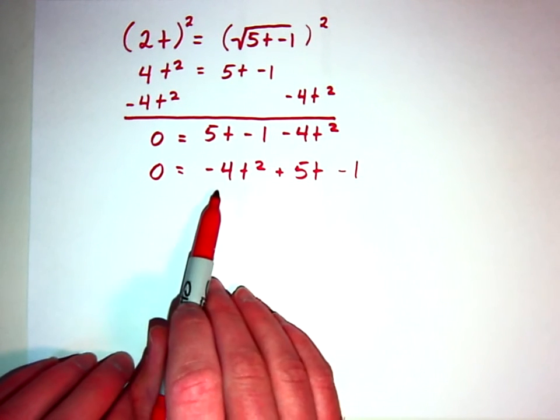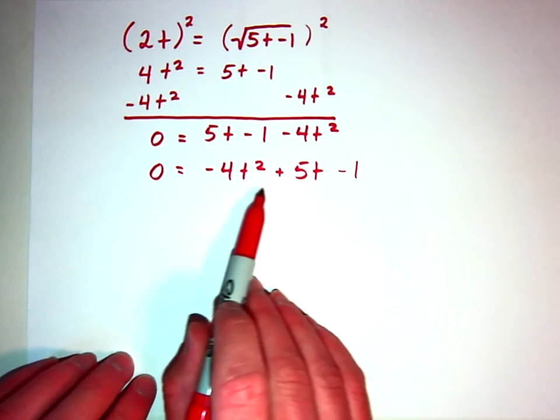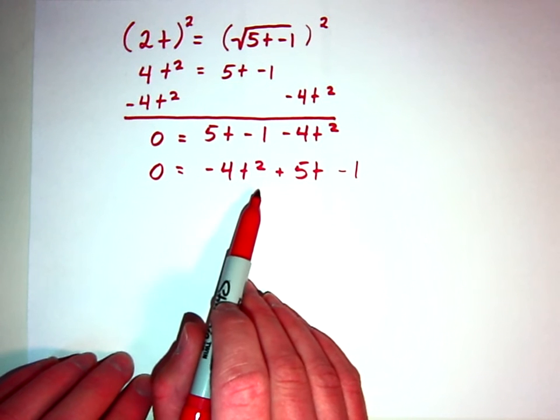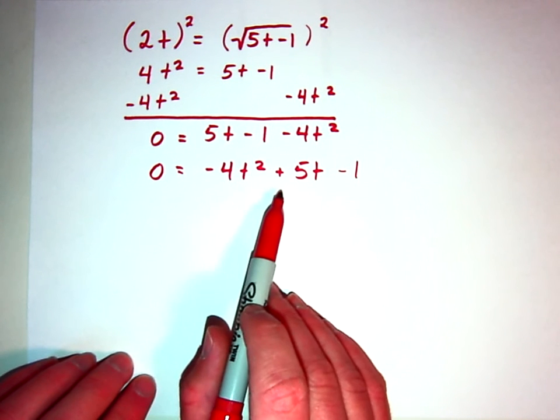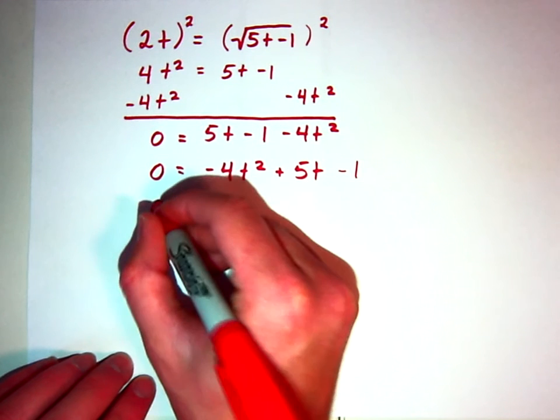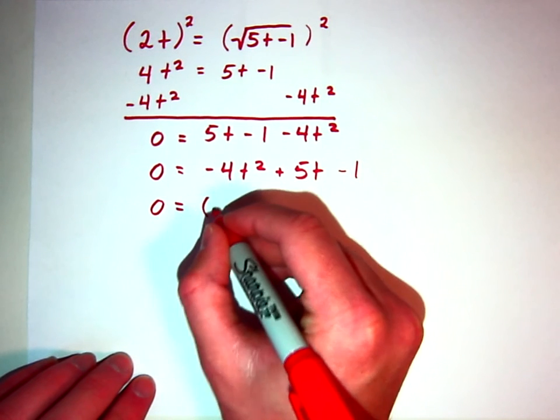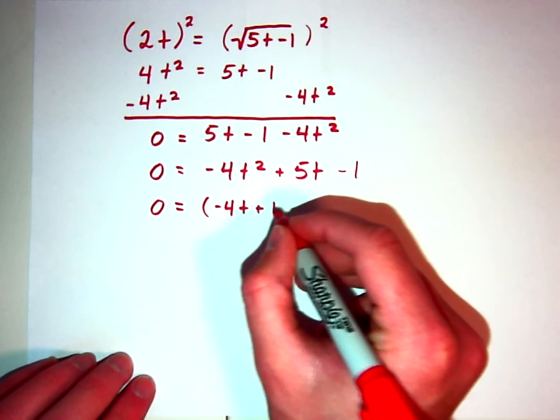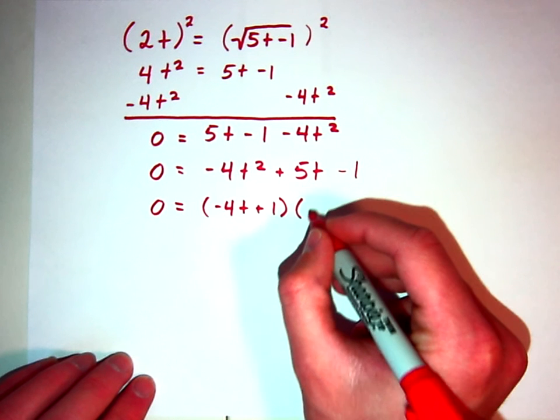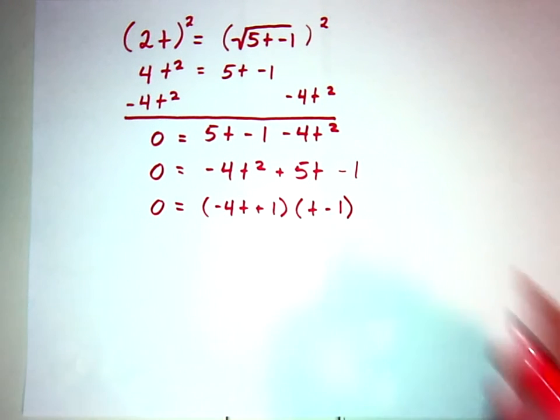From there, you're going to look at that side of the expression, and you're going to use the skills you've learned for factoring. And you need to factor this. So, if we factor it, we get 0 equals, open parenthesis, negative 4t plus 1, open parenthesis, t minus 1.